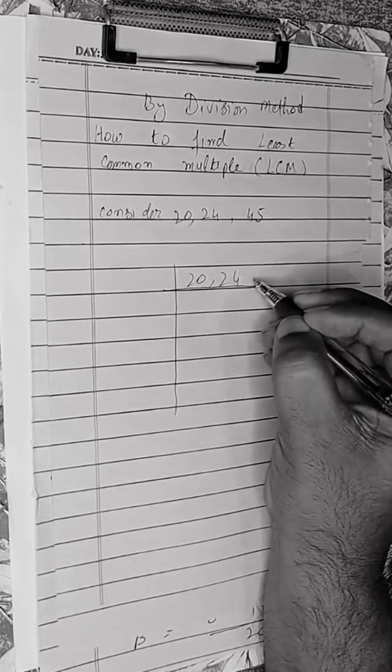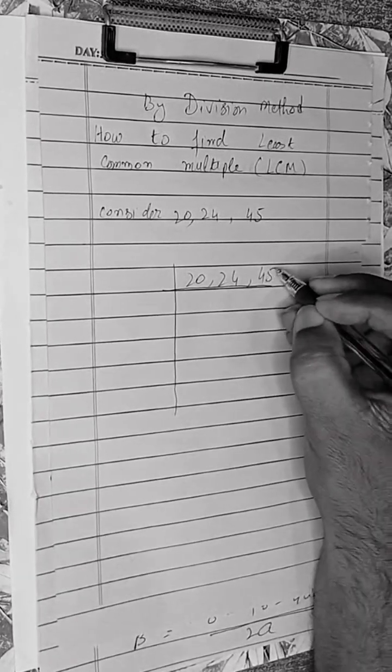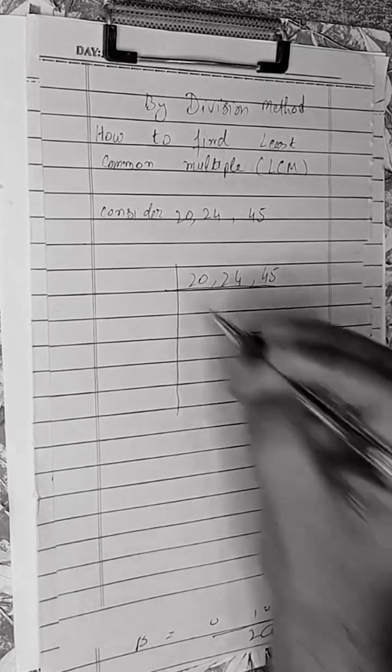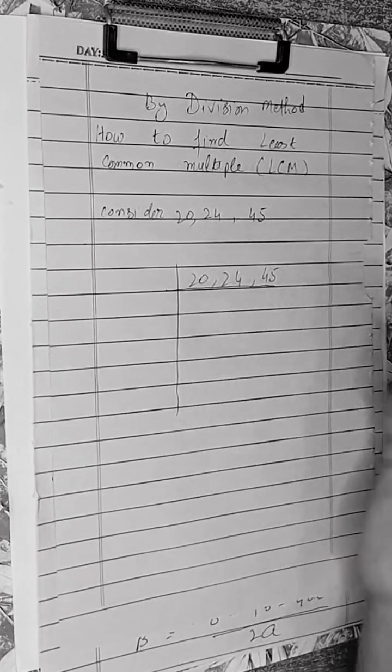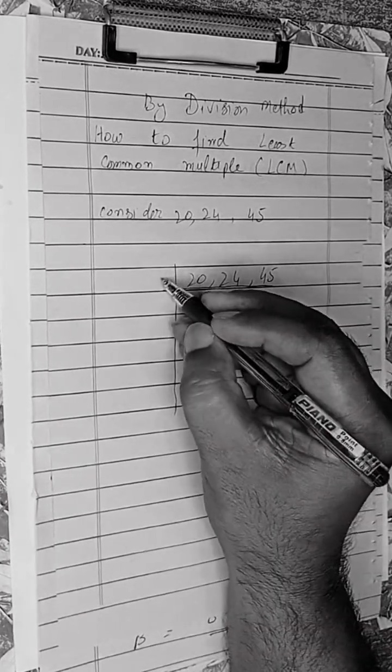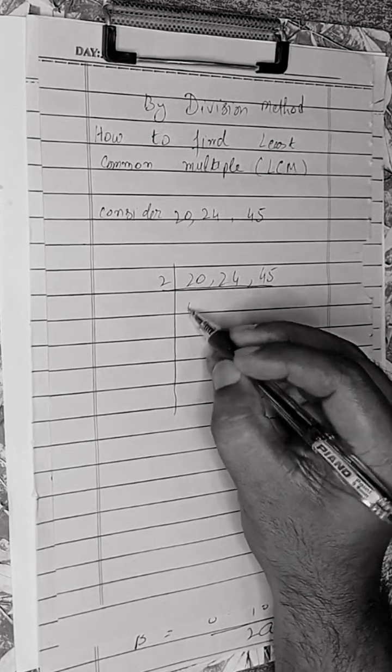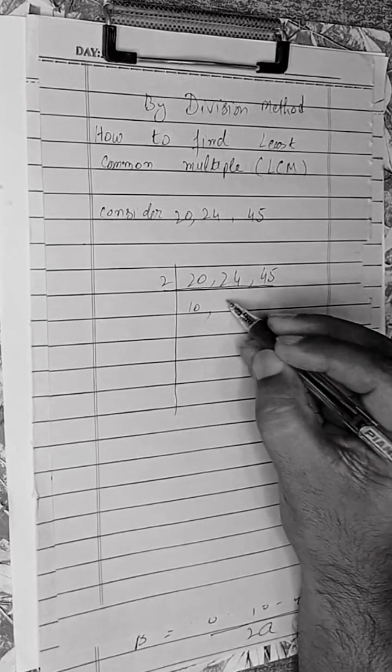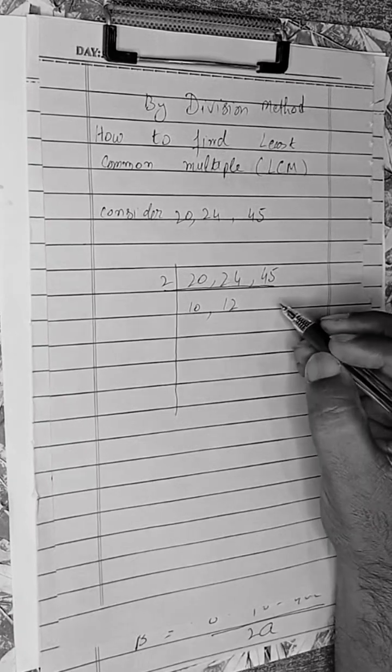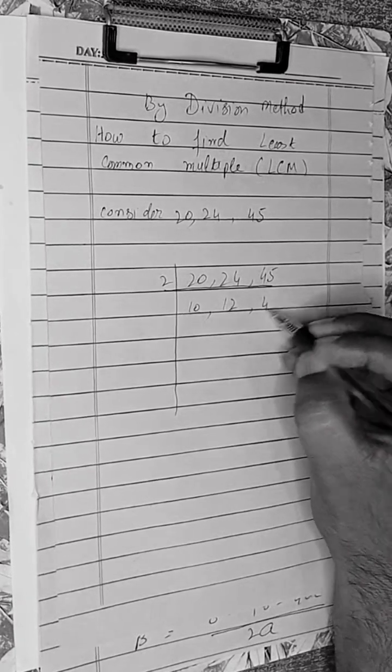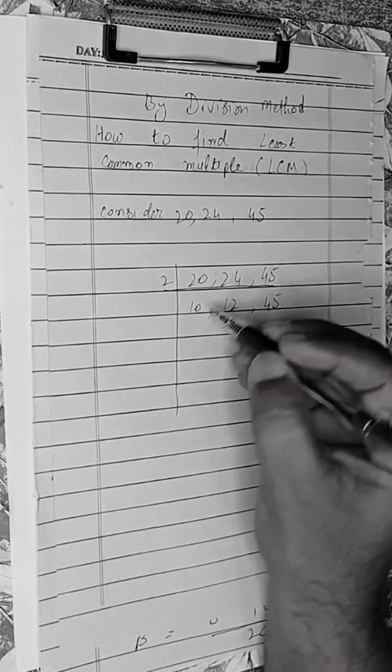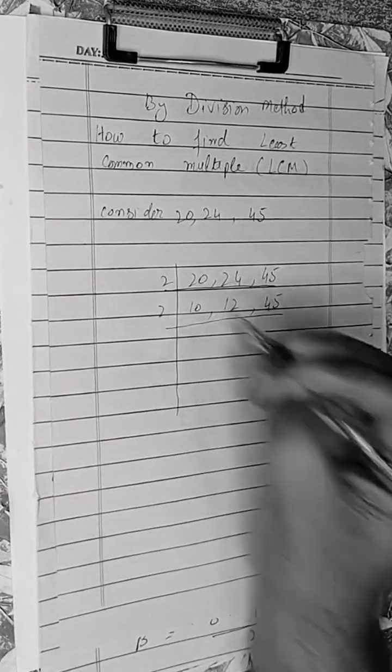20, 24, and 45. Keep dividing by 2, which is a prime number. It can also be a prime factorization. 2 will divide: 20 divided by 2 is 10, 24 divided by 2 is 12, and 45 will remain as it is. Now again divide by 2.